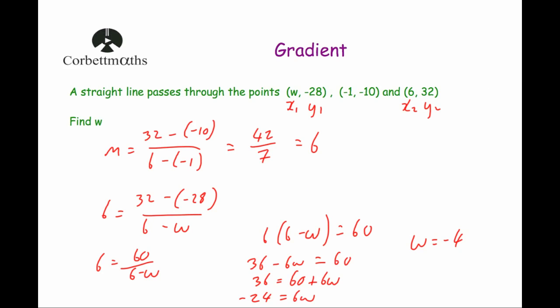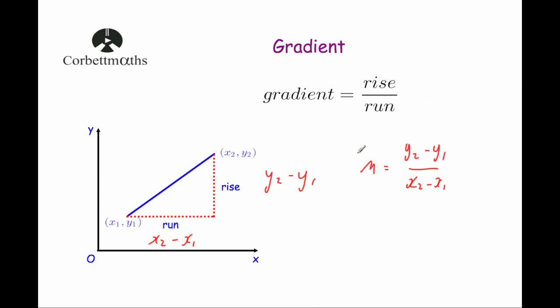So to summarise: at GCSE level you may have used gradient equals rise divided by run, but it can also be useful to use the formal formula that the gradient m equals y2 minus y1 over x2 minus x1.